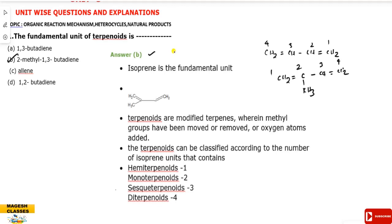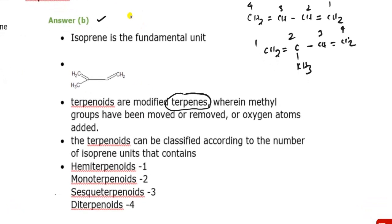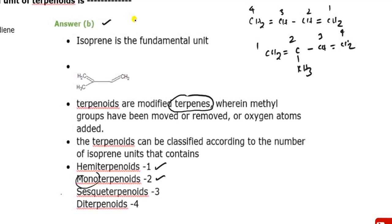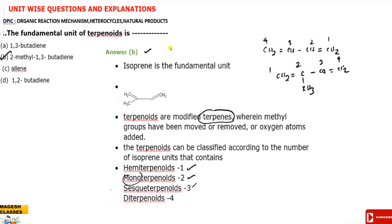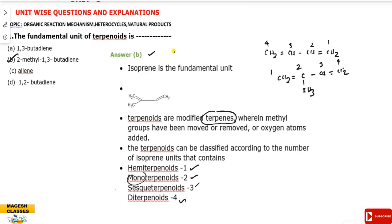Additional information on terpenoids: terpenoids are modified terpenoids where methyl groups have been removed or oxygen atoms added. Terpenoids are classified according to the number of isoprene units they contain. Hemi-terpenoids: one isoprene unit. Mono-terpenoids: two units. Sesqui-terpenoids: three units. Di-terpenoids: four isoprene units. So the answer is B — the fundamental unit of terpenoids is 2-methyl-1,3-butadiene.